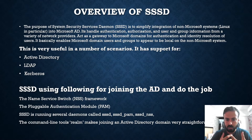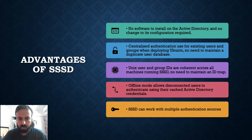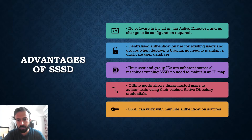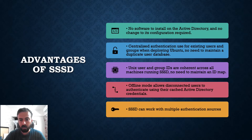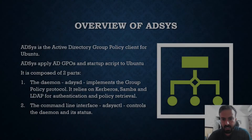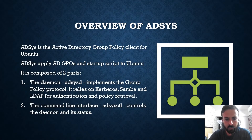SSSD basically enables Microsoft domain users and groups to appear as local to non-Microsoft systems. Some advantages: no software to install in Active Directory, no changes required, centralized authentication using existing users and groups. When deploying Ubuntu, no need to maintain a duplicate user database — Unix user and group IDs are coherent across all machines running SSSD. No need to maintain an ID map, and offline mode allows disconnected users to authenticate using their cached Active Directory credentials. SSSD can work with multiple authentications.